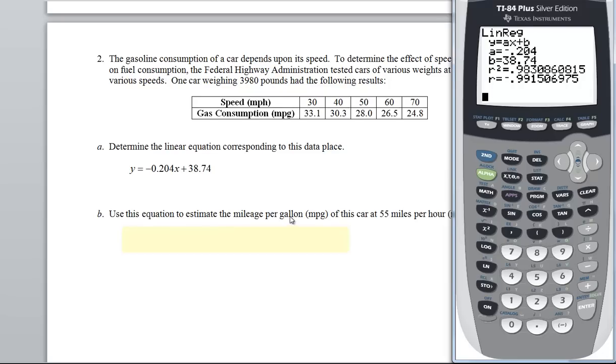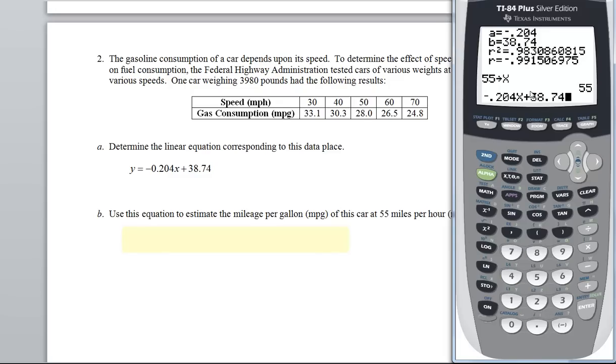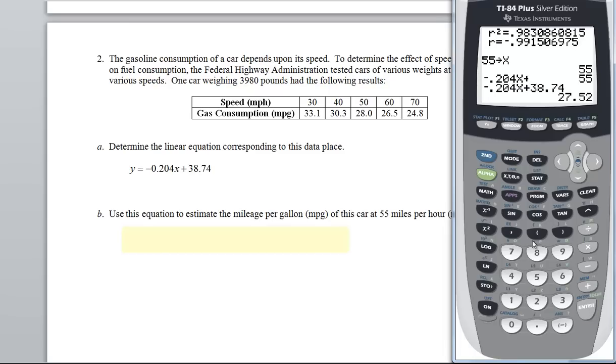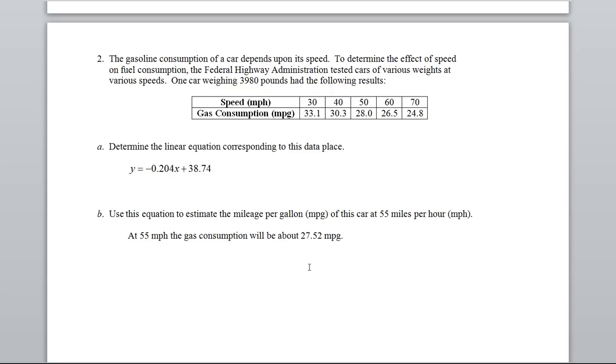Use this equation to estimate the mileage per gallon, the MPG. So they're asking me to find the Y of this car at 55 miles per hour. So let me store in 55, and then type in negative .204X plus 38.74. So it looks like it will be around 27.52 miles per gallon. But that's how we use our calculator to find equations. And yes, you will be doing this all the way through this class. Talk to you later. Bye-bye.